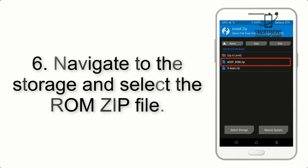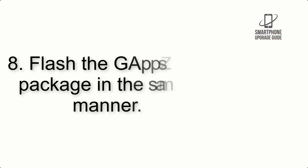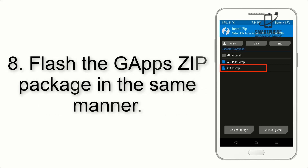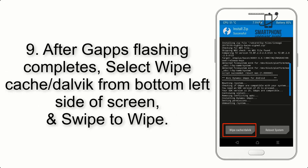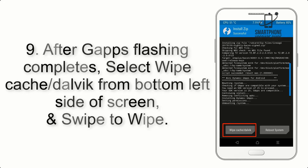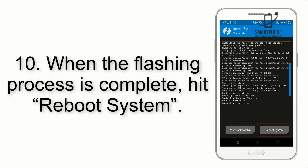Step 5: go back to the recovery main screen and tap on the Install button. Step 6: navigate to the storage and select the ROM zip file. Step 7: swipe the button on the screen to install the ROM file. Step 8: flash the Gapps zip package in the same manner. Step 9: after Gapps flashing completes, select Wipe Cache and Dalvik from the bottom left side of the screen and swipe to wipe.